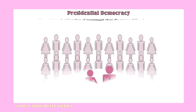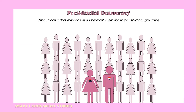Just as a parliamentary democracy has three branches of government and the citizens vote for representatives, so does a presidential democracy. The difference is that in a presidential democracy, citizens vote for each representative as well as the president. Additionally, each branch of government has a share in the governing of society.